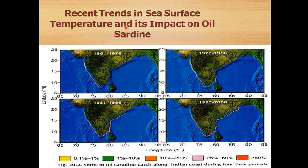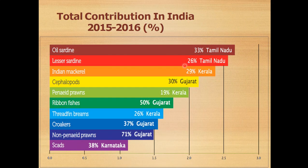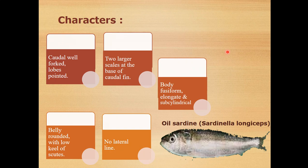This is the recent trend in sea surface temperature and its impact on oil sardine. The oil sardine contributes 33% of the total fish contribution in India — the highest among species like ribbon fish and others. It is distributed not only in India but also in the Philippines, Sri Lanka, Malaysia, Indonesia, Vietnam, and other countries.